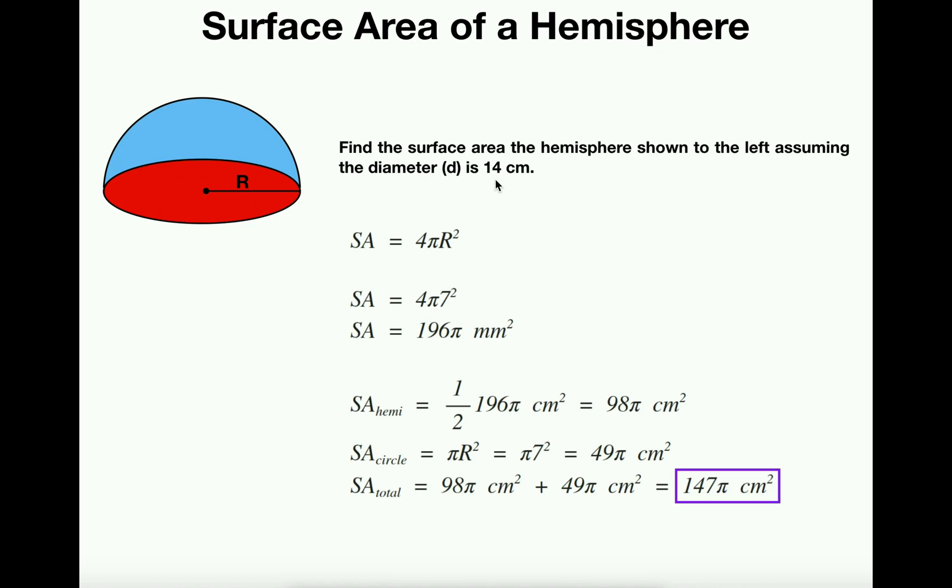We know one thing immediately. Because the diameter is 14 centimeters, the radius is 7 centimeters because the radius has to be half of this.